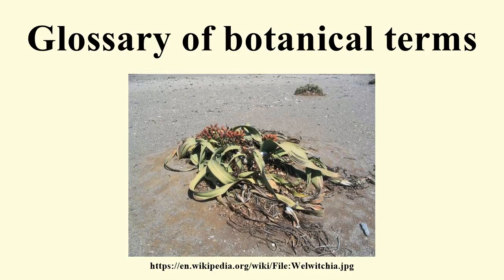Bulb: a thick storage organ, usually underground, consisting of a stem and leaf bases. Bulbella: a bulb arising from another bulb. Bulbil: a small deciduous bulb or tuber formed in the axil of a leaf or pinna, a means of vegetative propagation. Bullate: a surface with rounded or globular blisters. Burr: loosely, a prickly fruit; a rough or prickly propagule consisting of a seed or fruit and associated floral parts or bracts. Buttress root: a root growing from the above-ground stem or trunk and providing support, as in the case of Ficus macrophylla, the Moreton Bay fig. Byssoid: a growth form of a lichen thallus that is wispy, like teased wool.